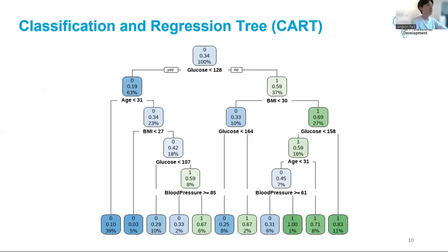So this is our CART model trained on the Pima Indians diabetes dataset. In the very beginning, we split on the variable or the feature glucose and divide the feature space into glucose smaller than 128 and glucose larger than or equal to 128.